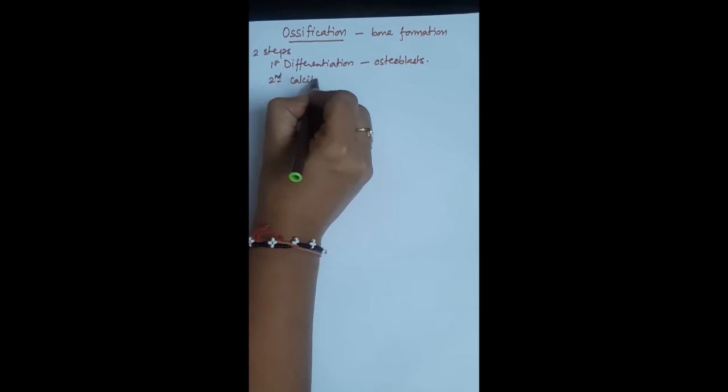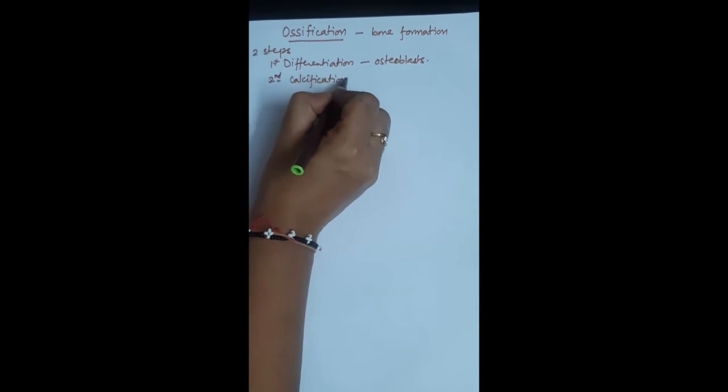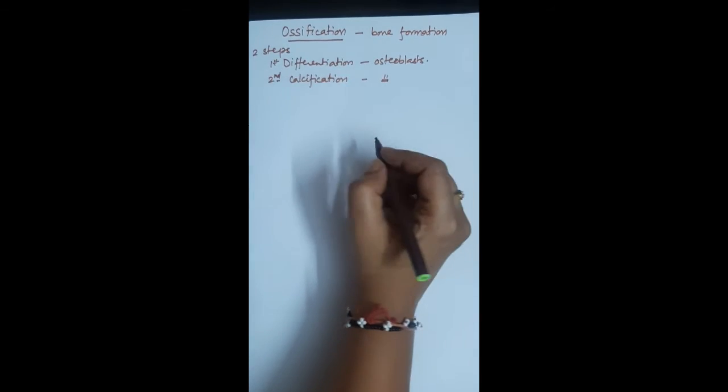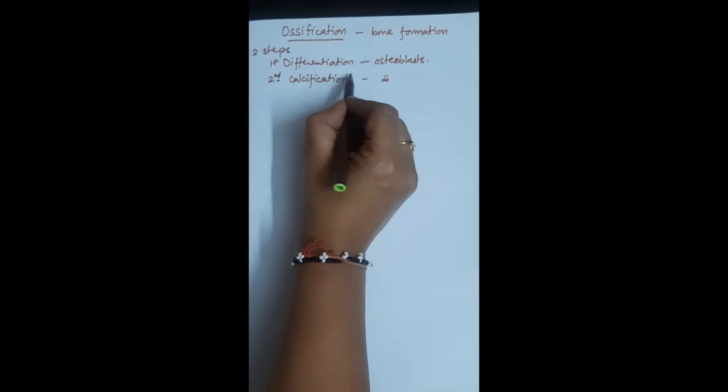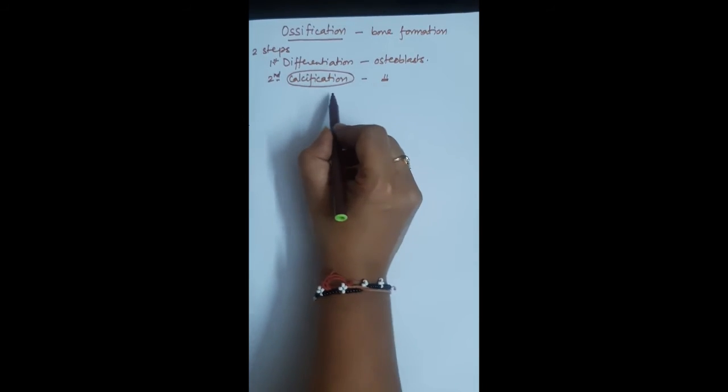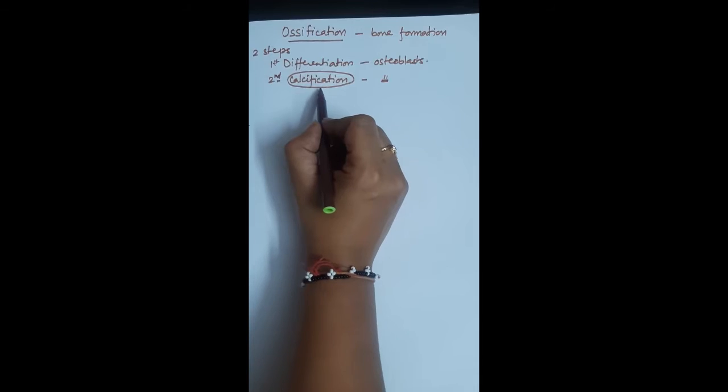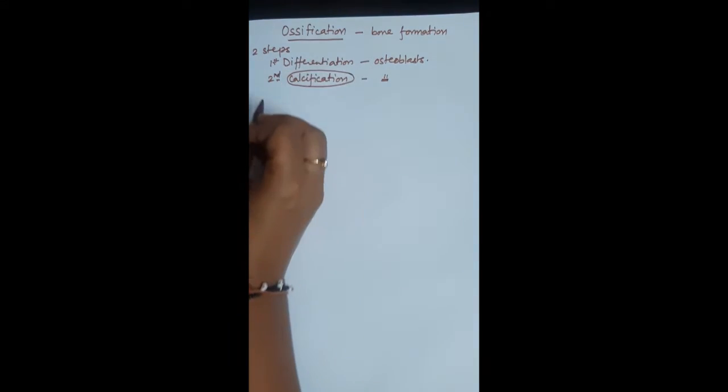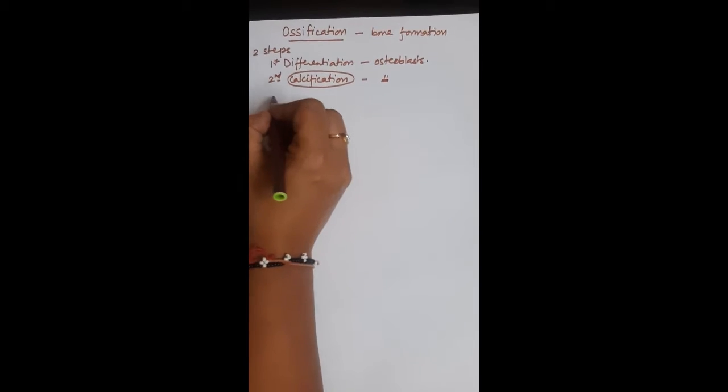Calcification of the organic bony matrix laid down by the osteoblast cells. So here we see calcification is not equal to ossification. Calcification is just a part of the broader process called ossification. Now we have to remember that bone tissue is always formed on a pre-formed structure or surface.